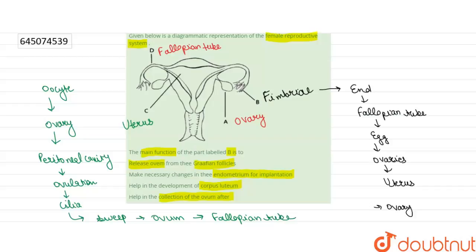So fimbriae help in the collection of the ovum. The right answer is option number four. Thank you.